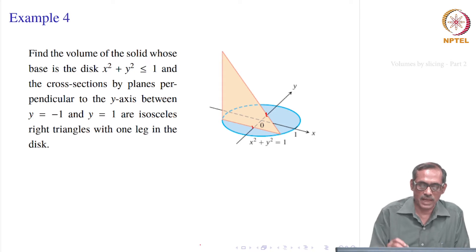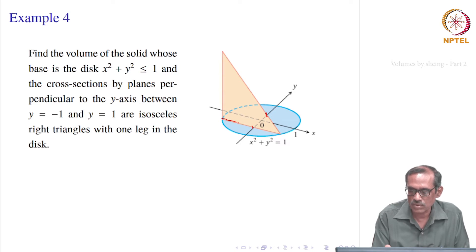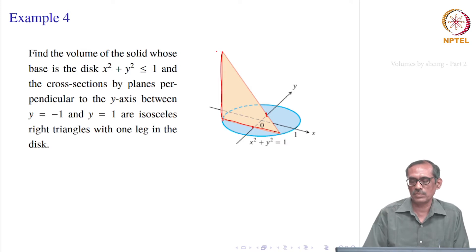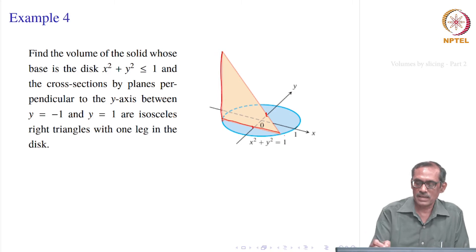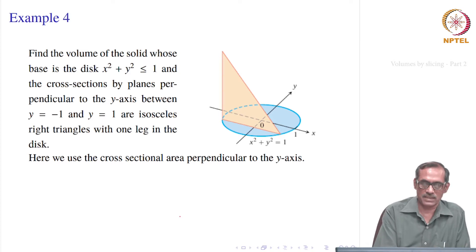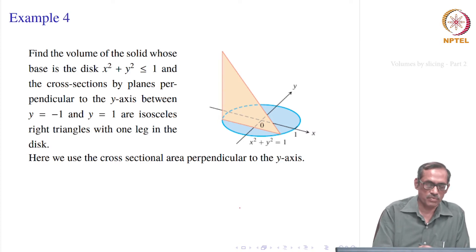And it forms an isosceles right triangle with one leg in the disk. So it is an isosceles triangle, meaning this leg is equal to this leg — the sides of these two become the same, that is what it says with one leg in the disk. We are really using the cross sectional area perpendicular to the y-axis instead of x-axis here. So our integrals will correspond with respect to y and this cross sectional area has to be written as a function of y.